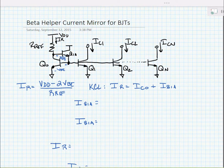That would be the emitter current of Q1A divided by beta plus 1, and that emitter current is equal to the sum of all of the base currents.